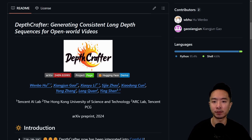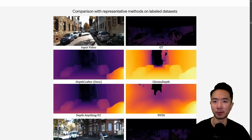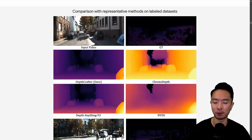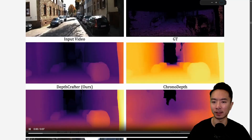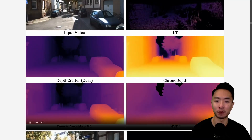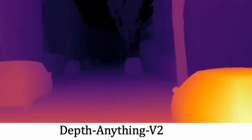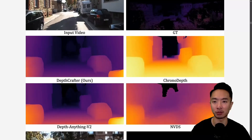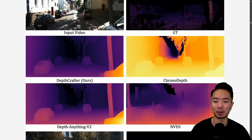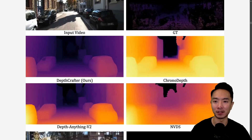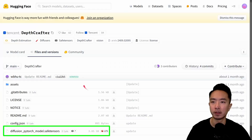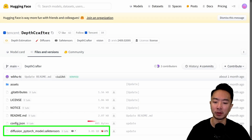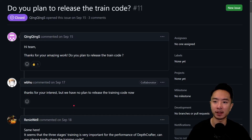Next is DepthCrafter. What really sets it apart from models like DepthAnything V2 is the temporal consistency of depth across video frames — it's very robust. DepthAnything V2 tends to flicker a lot frame to frame, but DepthCrafter produces a smooth and gradual change, which is critical for video applications where flickering causes unstable, jumping depth calculations. On HuggingFace, the model size is 3 gigabytes, and currently no training code is available to the public.